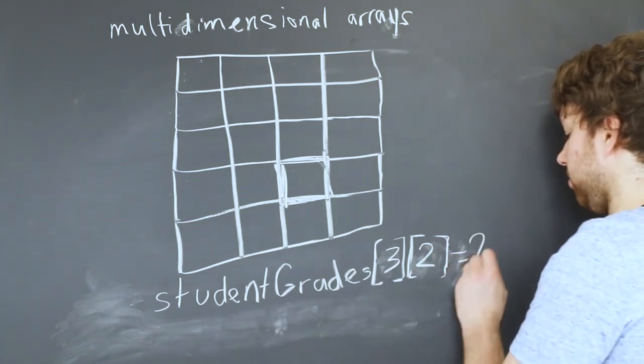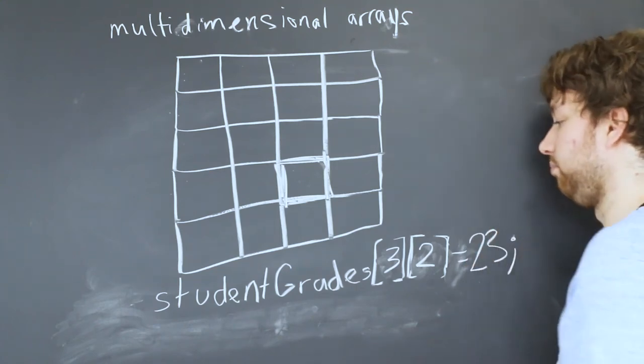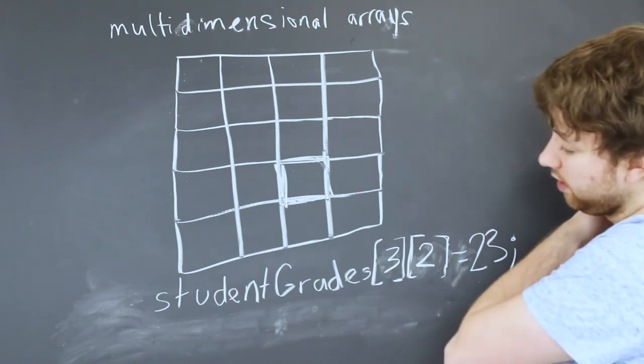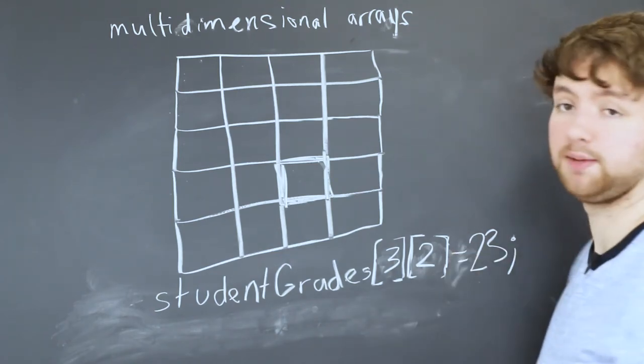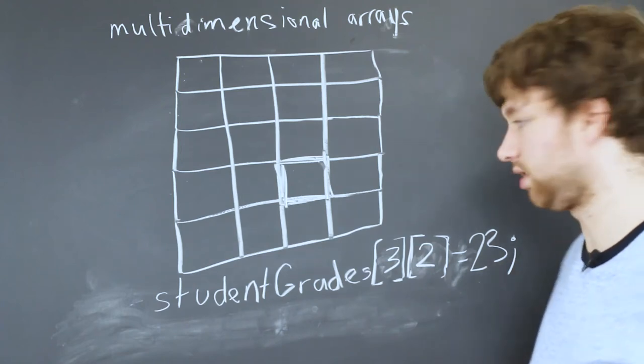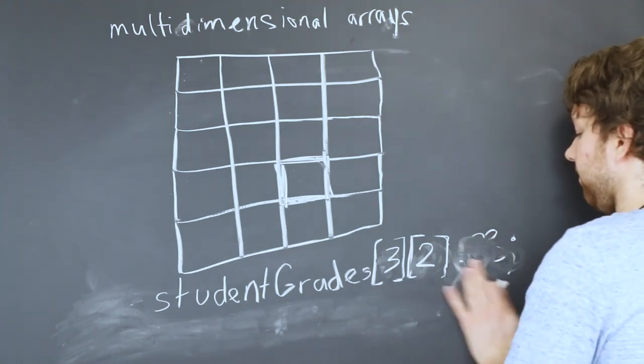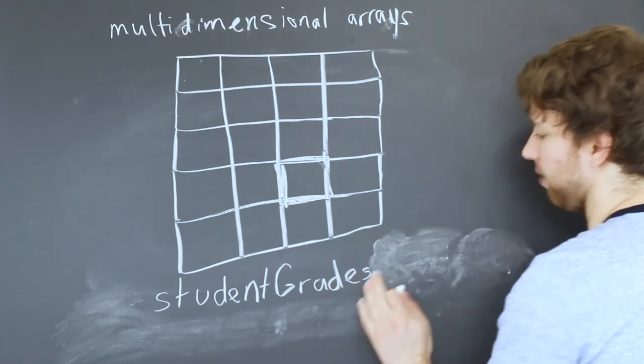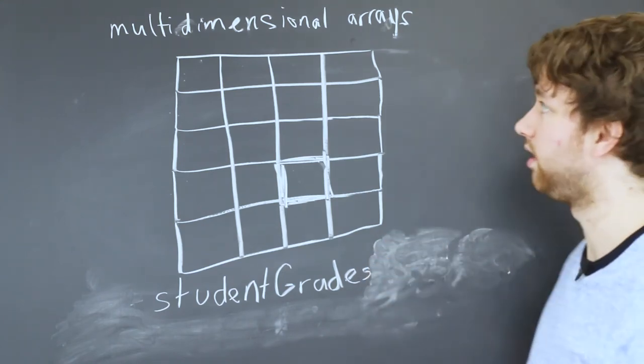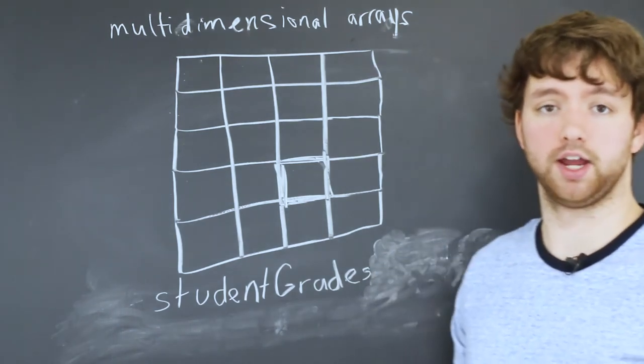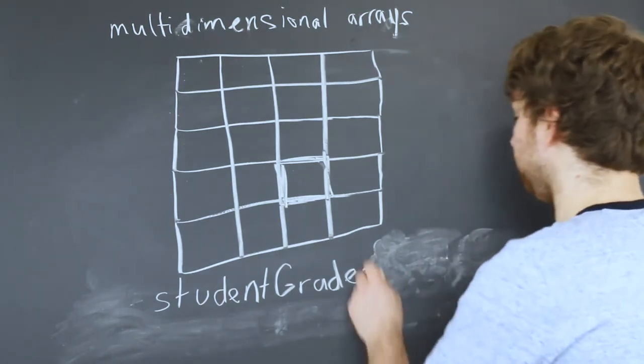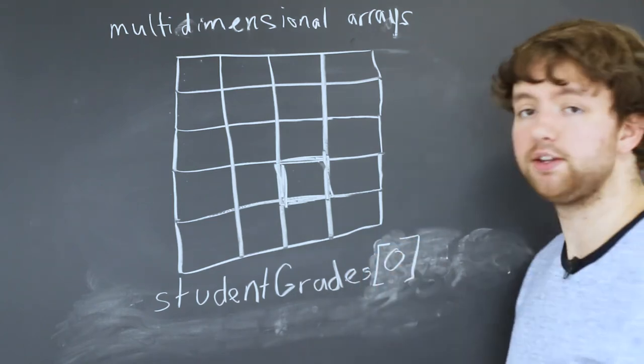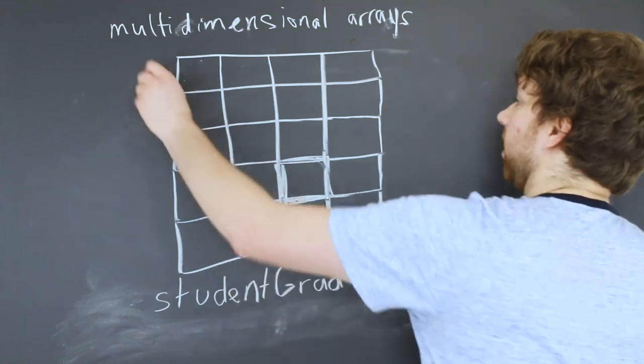So that is how multi-dimensional arrays work, and it's really important that you understand the data types and just what to call things. If you just have student grades by itself, this is a multi-dimensional array. It's a 2D array of integers. Now, if you have student grades with a number, that is a single dimensional array, one row right here.